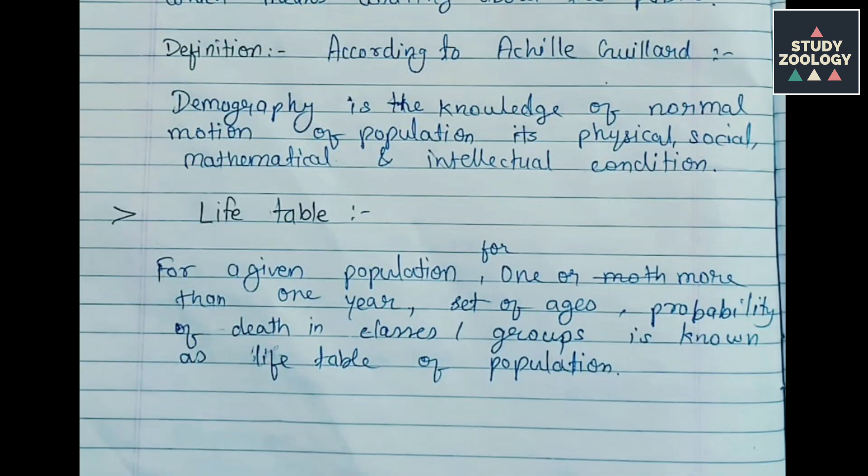Life Table: For a given population, for one or more than one year, a set of ages and probability of death in classes or groups is known as the Life Table of Population.